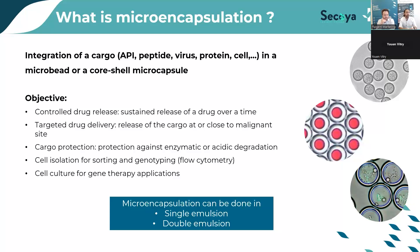The microcapsule can also act as protection — ensuring the capsule targets a specific organ and is not destroyed during physiological transport. The shell of the capsule protects the drug from enzymatic or acidic degradation, enabling drug release only at a specific site. Other applications include cell isolation for sorting and genotyping, where we encapsulate cells or bacteria inside double emulsions for flow cytometry sorting, and also cell culture, bacteria culture, organoids, and spheroids inside hydrogel microbeads.